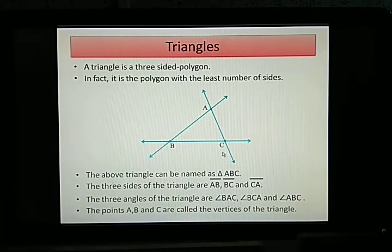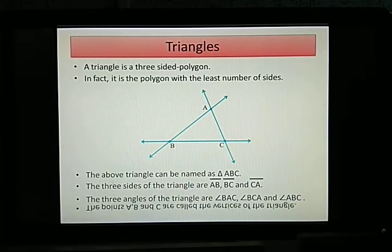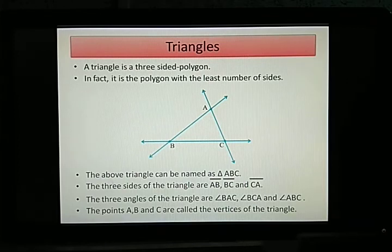Now there are also something called the vertex. We have read about this also in our earlier classes. So which are the vertex? The intersecting points of course. So the vertex will be here. The points A, B, and C. They are the vertices. There is a plural form. Vertices of the triangle.